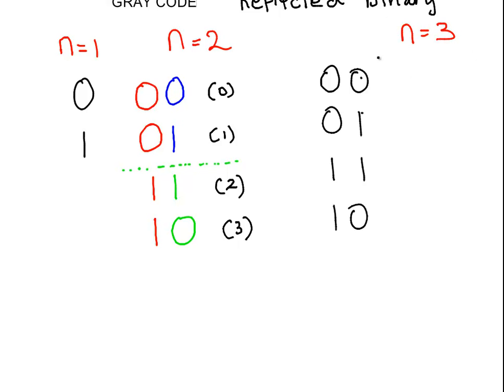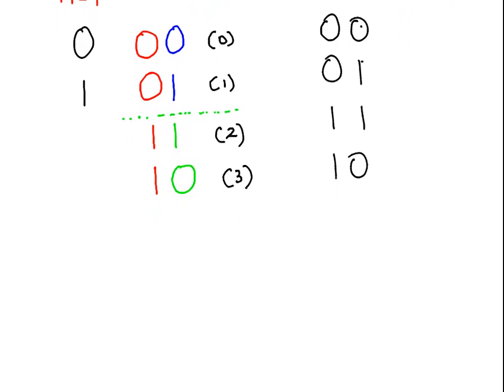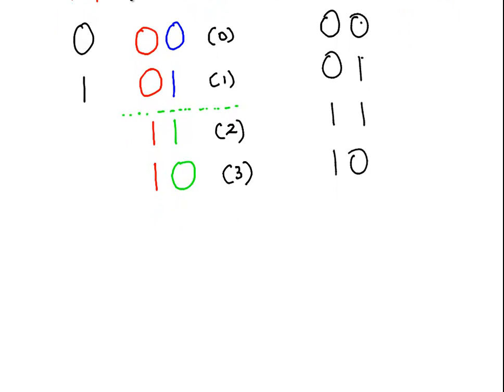We're going to write out the first 8 grey code numbers. It's the same rule of thumb again. What I'm going to do here is write out my numbers again, but I'm going to start from the bottom and work up.